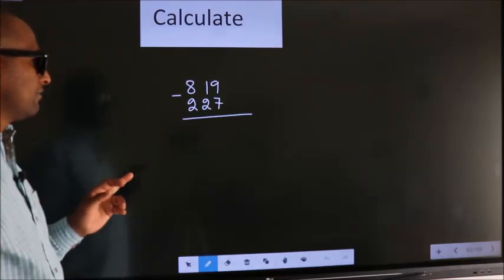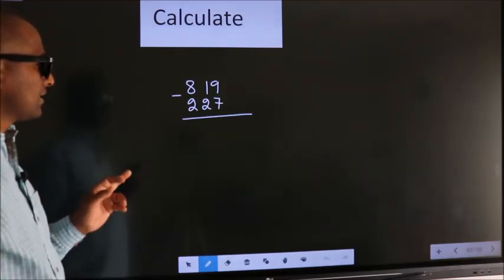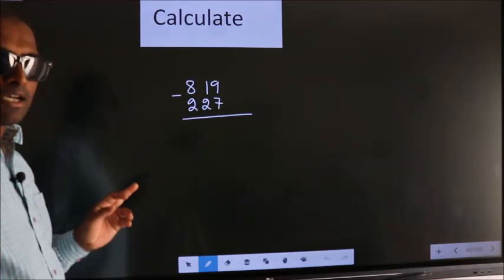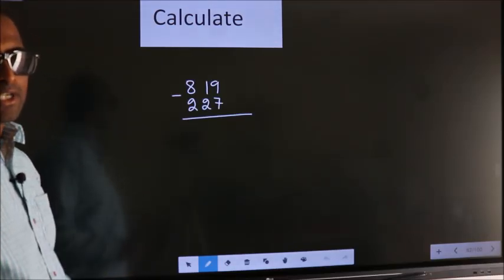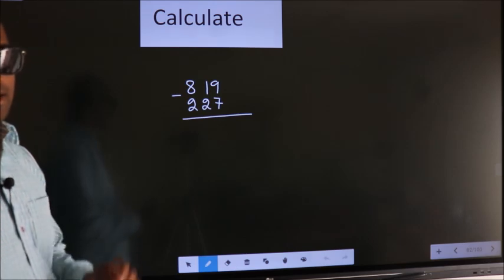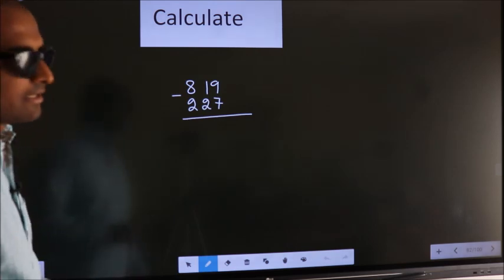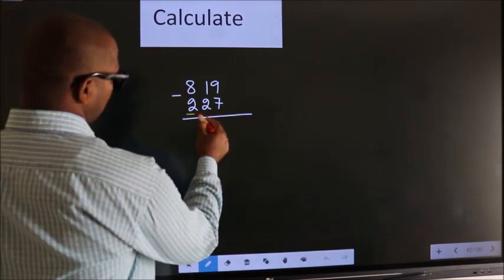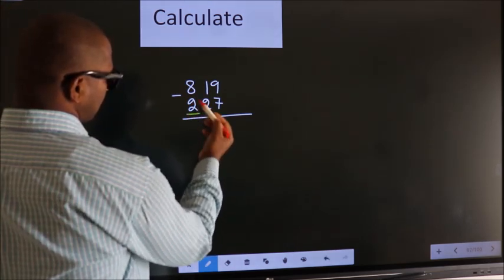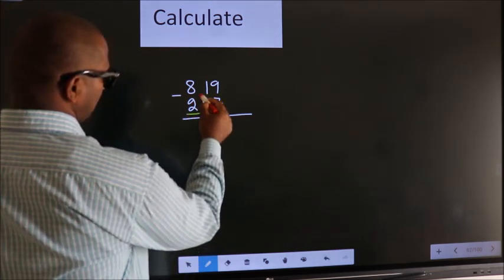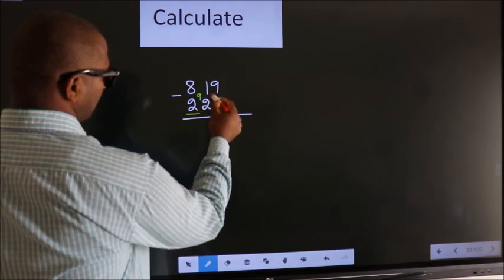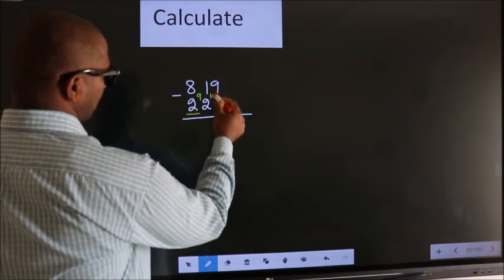Calculate 819 minus 227. How do we calculate this faster? See, you leave the first digit. Here you write 9, here you write 10.